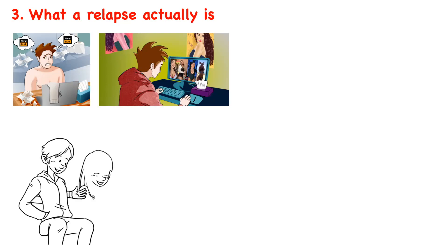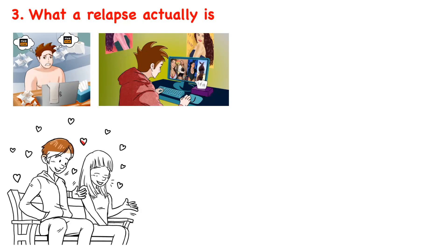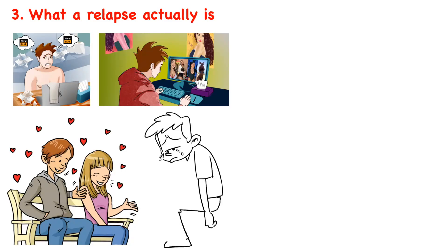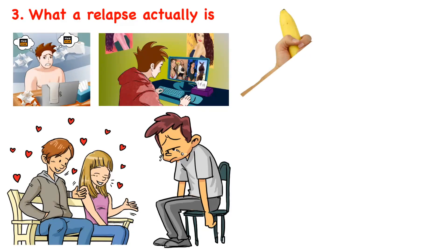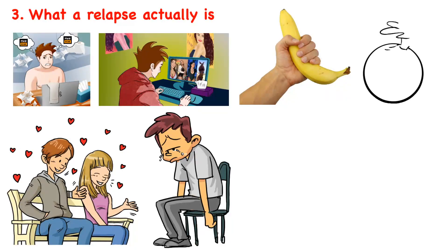You want to rewire your brain so that it gets excited by watching real women, not pixels on a screen. Therefore, watching adult content will always mean you have relapsed. If you watch adult content, you have already relapsed. In addition, if you chose Standard Mode, engaging in M will also count as a relapse. If you chose Hard Mode, having an O will count as a relapse.